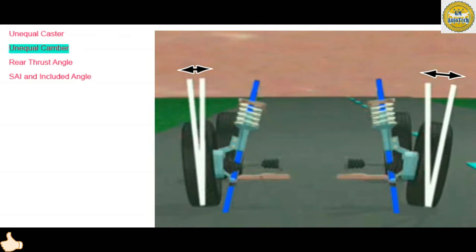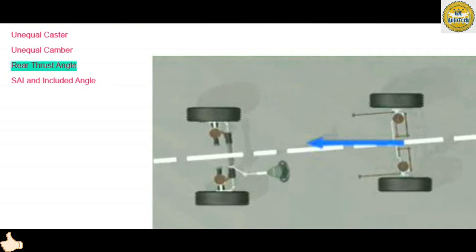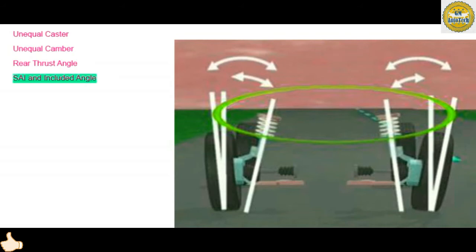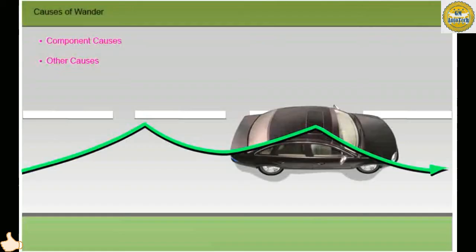If camber is unequal, a pull will occur to the side with the most positive camber. If the front wheel alignment is within specifications, there may be a concern with the rear thrust angle. If the rear thrust angle is misaligned, the vehicle will tend to pull in the opposite direction of the thrust angle. When diagnosing a pull condition, pay close attention to large differences in side-to-side SAI and included angle. Large side-to-side differences in SAI or included angle can indicate a bent component that causes the vehicle to pull.